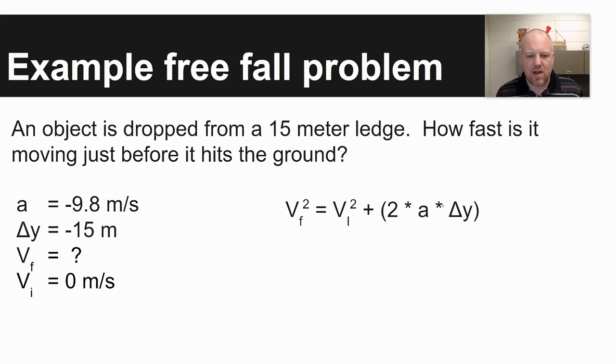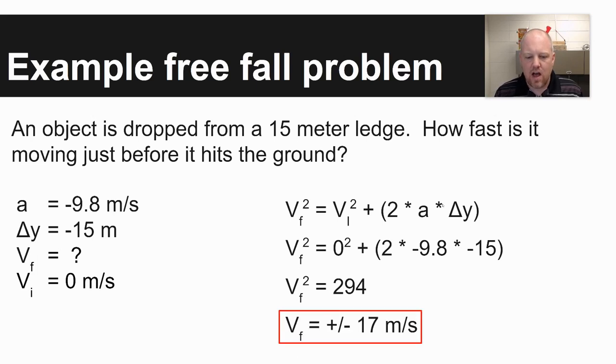So here's the equation, now it's just a matter of taking the values that we're given and plugging them in. Vf squared is what we're looking for, is equal to 0 squared plus 2 times negative 9.8 times negative 15. I'm going to take care of everything in the parentheses first, and then 0 squared is just 0. So velocity final squared is equal to 294, meaning your velocity final could be plus or minus 17 meters per second. Since it's moving down, your answer to this problem would be negative 17 meters per second.